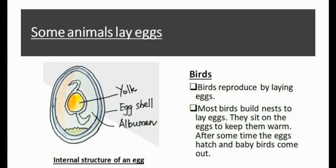The eggs of all birds have a similar internal structure. Each egg has a hard protective outer shell called the eggshell. Within the shell is the egg white, called albumin, and within the albumin is the round yellow part called the yolk.